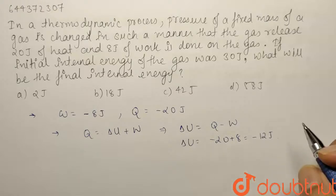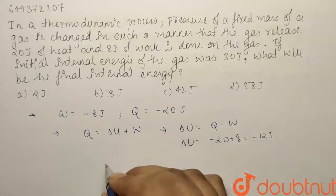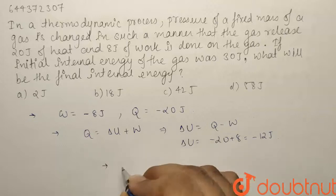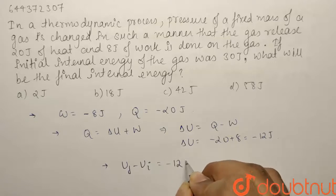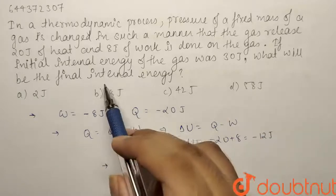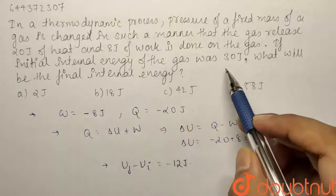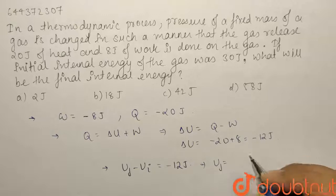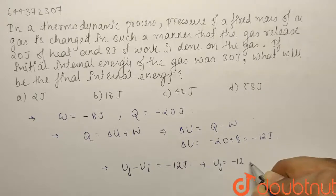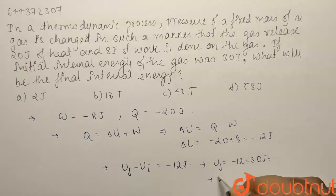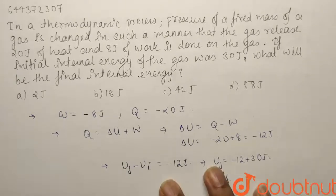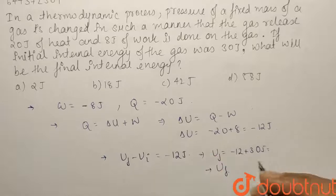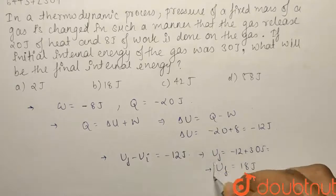Now the internal energy has decreased by 12 joules. We know delta U equals U final minus U initial, and it equals minus 12. We have to find the final internal energy whereas the initial internal energy is 30 joules. So U final is minus 12 plus U initial, that is 30 joules. So U final, the final internal energy of the system, comes out to be 18 joules.